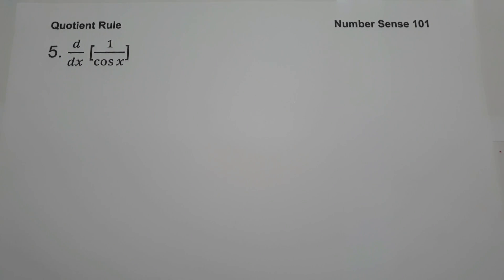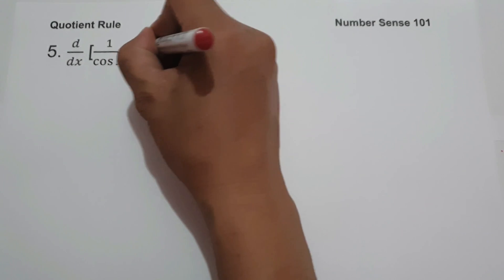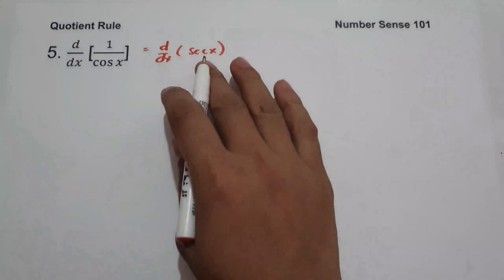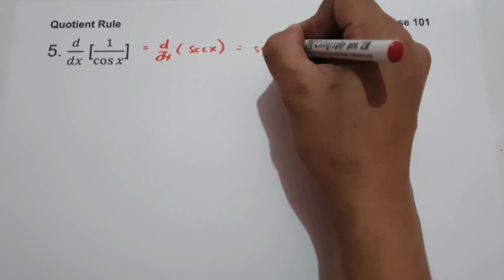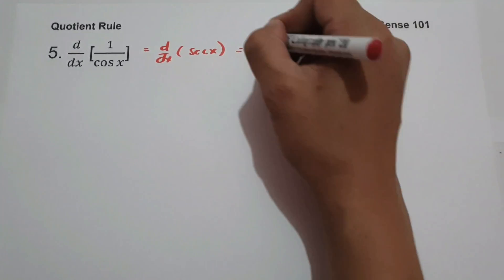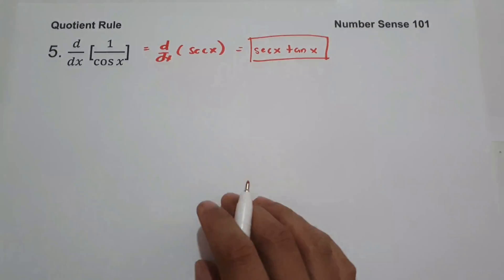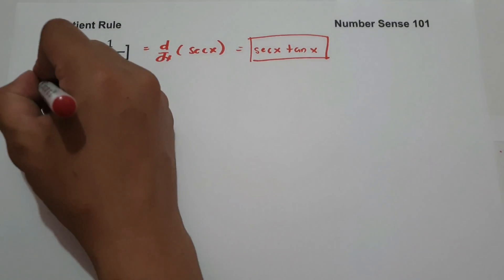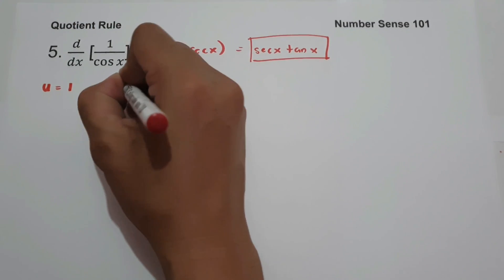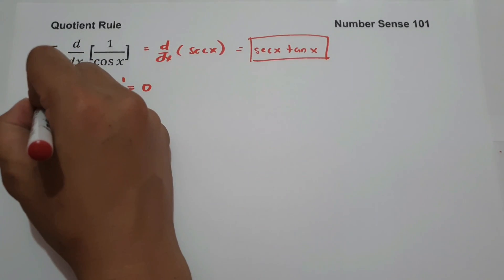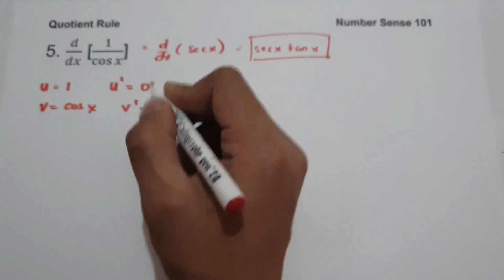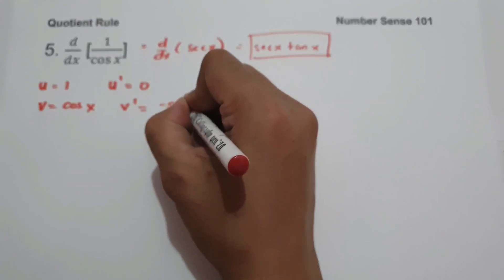On number 5, what is the derivative of 1 over cosine x? Since 1 over cosine x equals secant x, the derivative of secant x is secant x times tangent x. That is our answer. But let us apply the quotient rule. Let u equal 1 and u prime equals 0. Let v equal cosine x, and v prime is the derivative of cosine x, which is negative sine x.